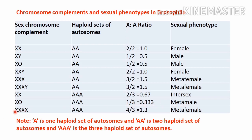For 4X with three autosome pairs: 4/3 = 1.3, metafemale. Here, A represents one haploid set of autosomes, 2A represents two haploid sets of autosomes, and 3A represents three haploid sets of autosomes.